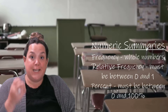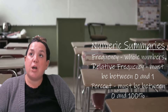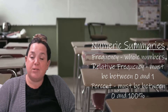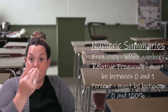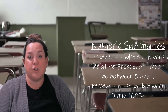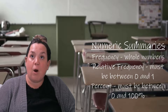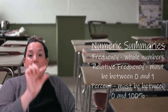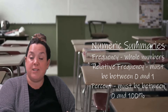For categorical data, we talked about three different numeric summaries. First, frequencies — the count or how many are in a group, which is always a whole number. Then we talked about relative frequency, which is the count relative to the total, represented as a fraction or decimal, always between zero and one. Finally, we multiply the relative frequency by 100 to get percentages, which must be between zero and one hundred percent.